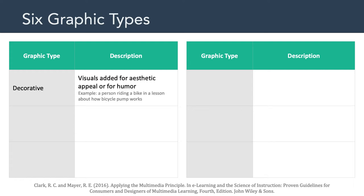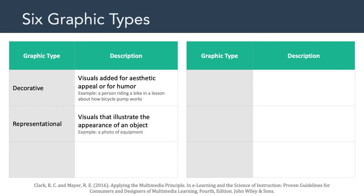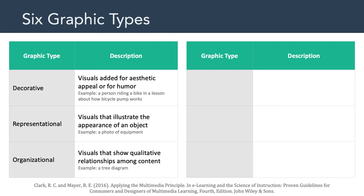The first graphic type is decorative. These are visuals added for aesthetic appeal and/or for humor. An example is a person riding a bike in a lesson about how a bicycle pump works — the picture is topically relevant but has nothing to do with how a bike pump actually works. The second graphic type is representational — visuals that illustrate the appearance of an object, such as a photo of equipment. The third graphic type is organizational, and these are visuals that show qualitative relationships among content, such as a tree diagram.